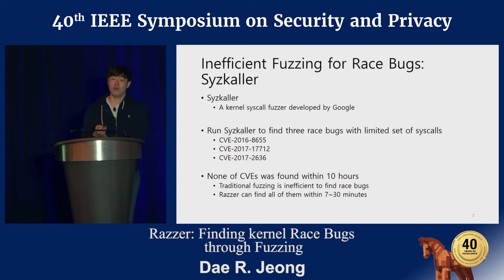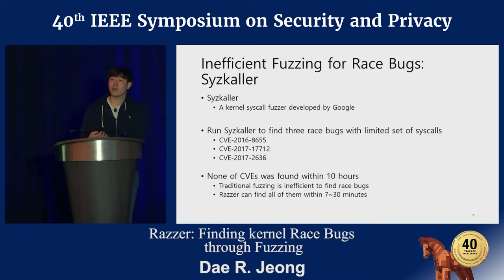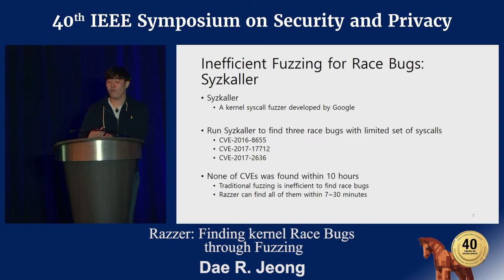To make a concrete case showing how inefficient traditional fuzzers are at finding race bugs, we performed a restricted experiment using Syzkaller, which is the kernel fuzzer developed by Google. We tried to give as many favors as possible in finding races — we limited the set of syscalls to easily trigger the race, and limited parameters so that it doesn't need to try many combinations. With these restrictions, Syzkaller failed to find all three race bugs in 10 hours. As I will show you later, our Razer found all of them in a very short time, from 7 to 13 minutes.